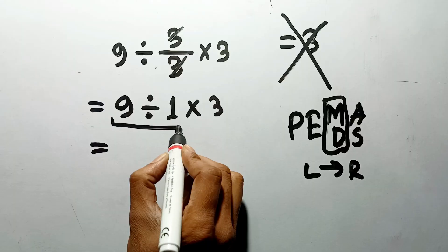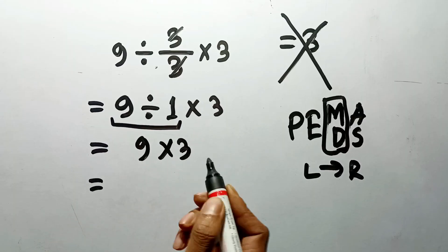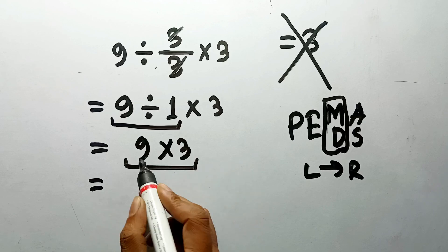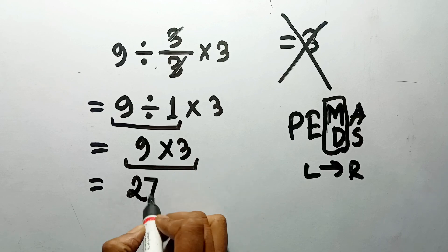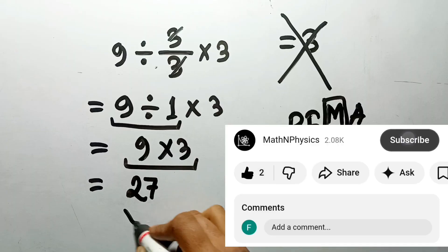9 divided by 1 gives us 9. So 9 times 3. Now we're left with just this simple multiplication. 9 times 3 gives us 27. And this is our final answer to this problem. The correct answer is 27.